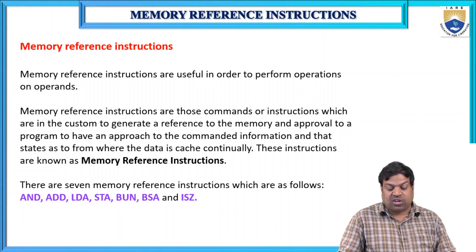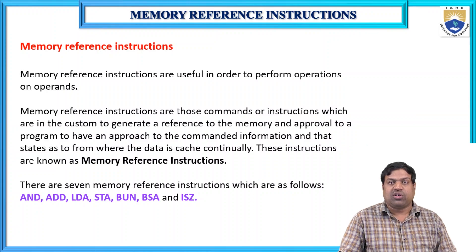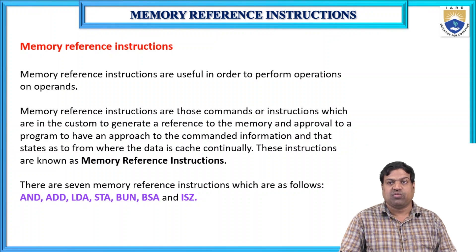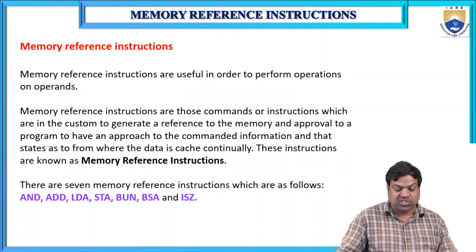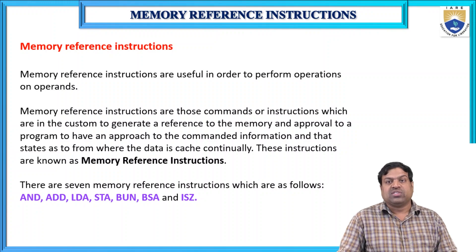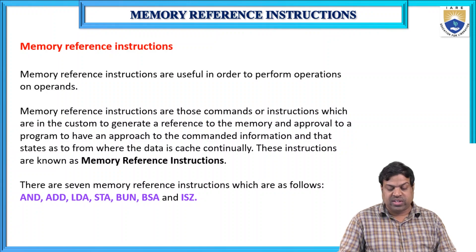Memory reference instructions are useful to perform operations on operands. They are commands that generate a reference to memory, allowing a program to access commands and data from where the data is fetched continuously. There are seven memory reference instructions: AND, ADD, LDA, STA, BUN, BSA, and ISZ.